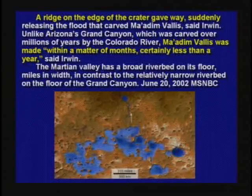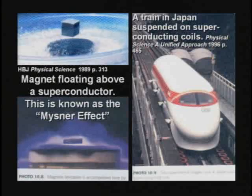Next, the Meissner effect — two magnets put together so one floats on top of the other. That's how the Japanese magnetic levitation trains work, flying down the tracks with no friction. Also keep in mind that comets flying through space are extremely cold — 300 to 400 below zero Fahrenheit.